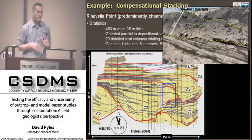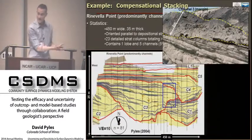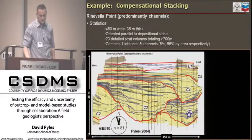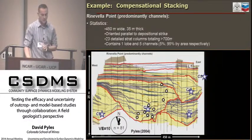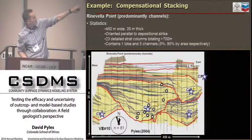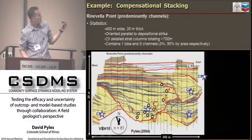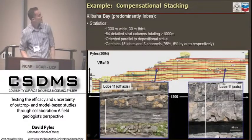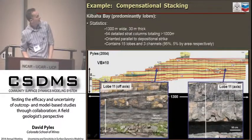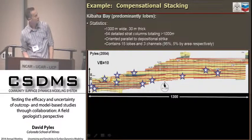The system is moving around quite a bit—the different channels are compensating a lot. However, if we look within the channel, we see significantly less offset between units, depicted with the black circles. At even smaller scales, we see more vertical aggradation. Comparing that with Kilbaha Bay, the system is much more tabular. The stratigraphy is far more tabular, and the bedding surfaces are very well exposed. For clarity: we see a lot of compensational stacking at Rhinevilla Point with the system shifting around a lot, and now we're going to quantify it.